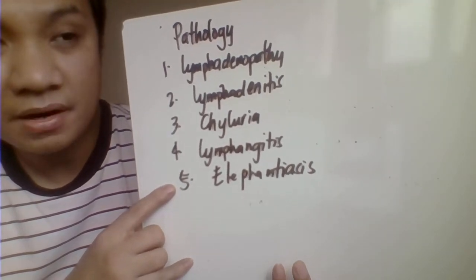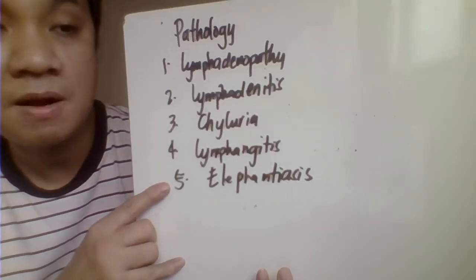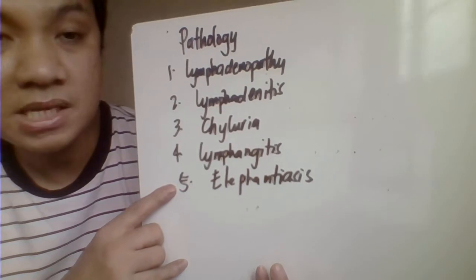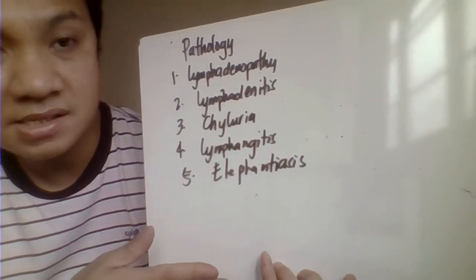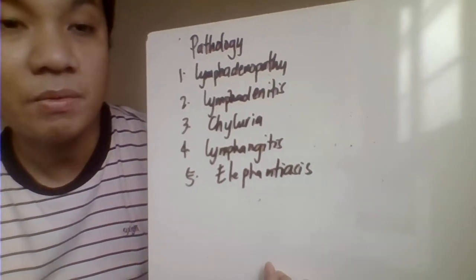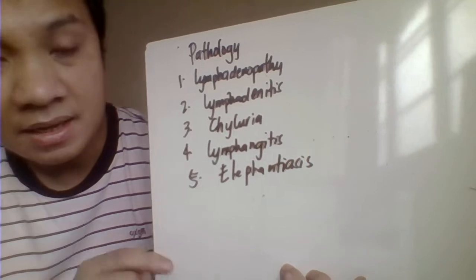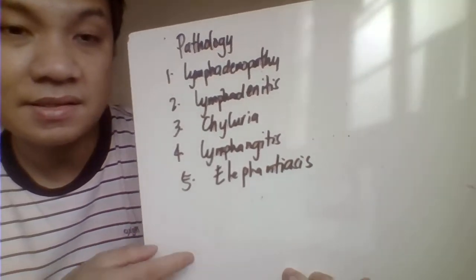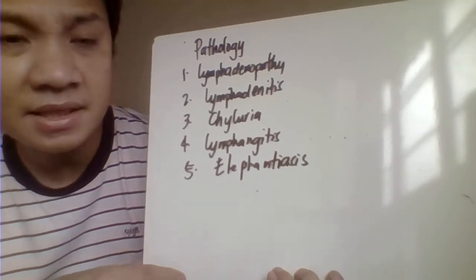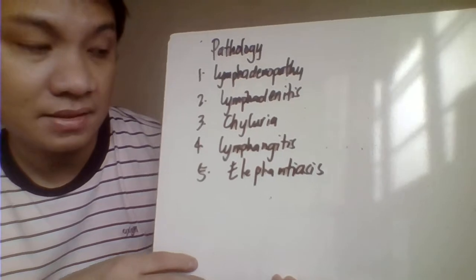Elephantiasis results from damage to the lymphatic vessels, causing lymphatic fluid to accumulate in the extremities, causing the organs to enlarge. Elephantiasis is a manifestation of chronic infection — some patients with the infection do not develop elephantiasis, while others do.